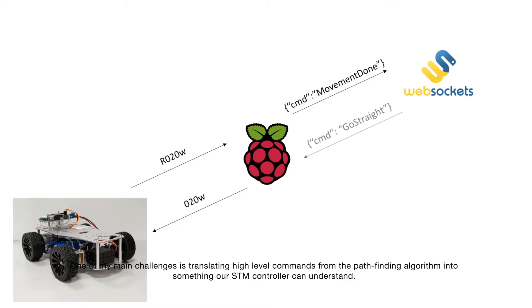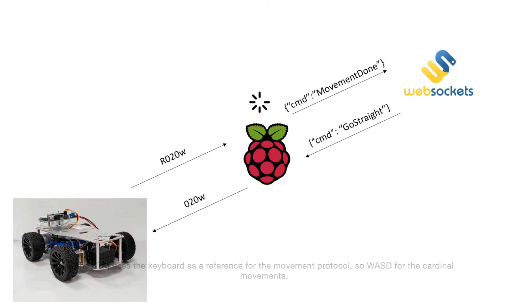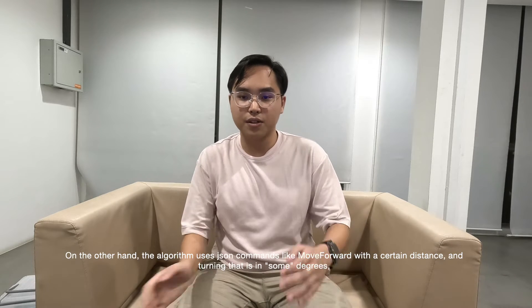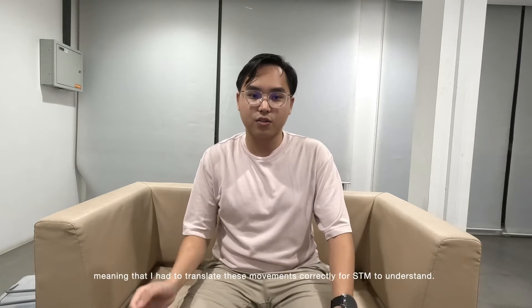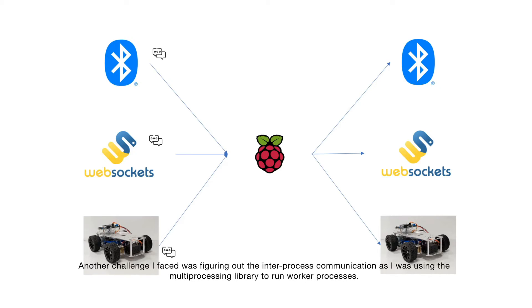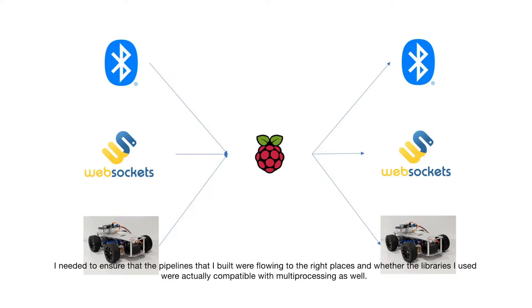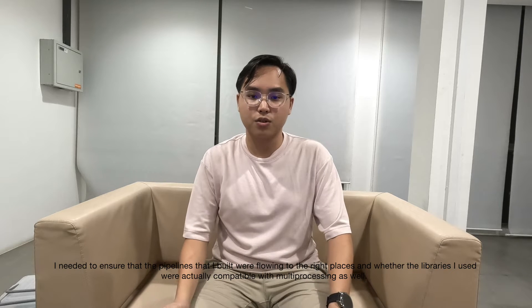One of my main challenges is translating high-level commands from the pathfinding algorithm into something our SDM controller can understand. The SDM team used the keyboard as a reference for movement protocol — WASD for the cardinal movements. On the other hand, the algorithm uses JSON commands like move forward with a certain distance and turning in some degrees, meaning I have to translate these movements correctly for SDM to understand. Another challenge was figuring out the inter-process communication, as I was using the multi-processing library to run local processors and needed to ensure that the pipelines I built were flowing to the right places, and that the libraries I used were compatible with multi-processing.